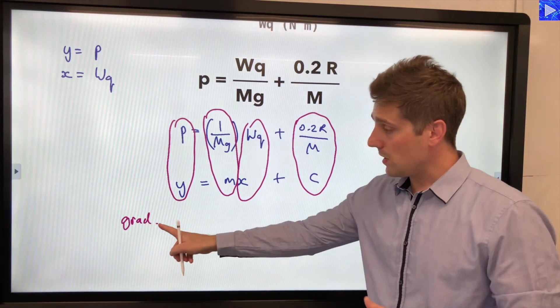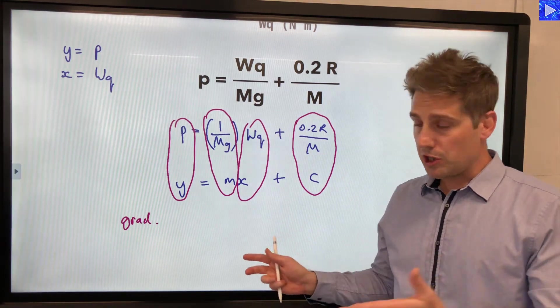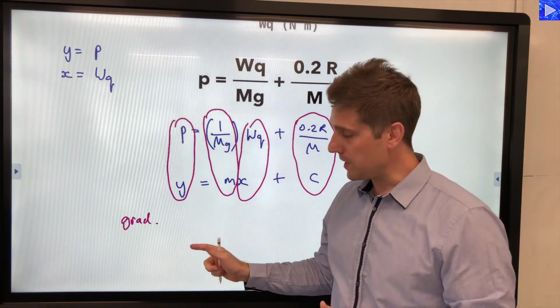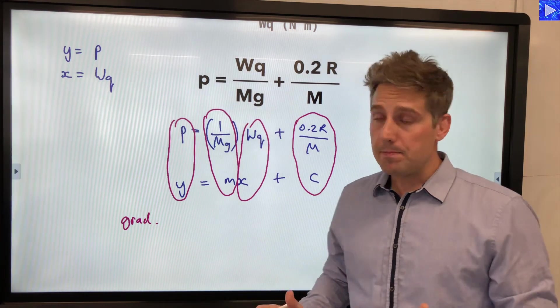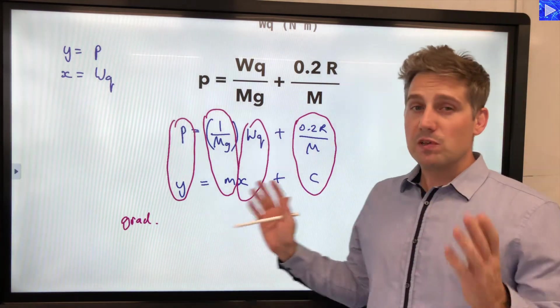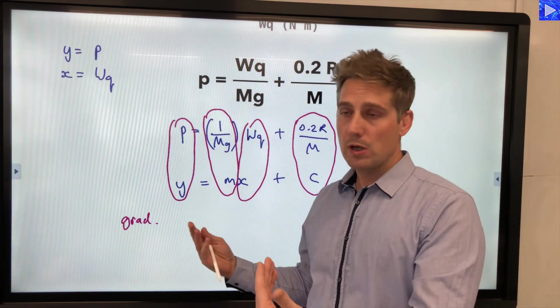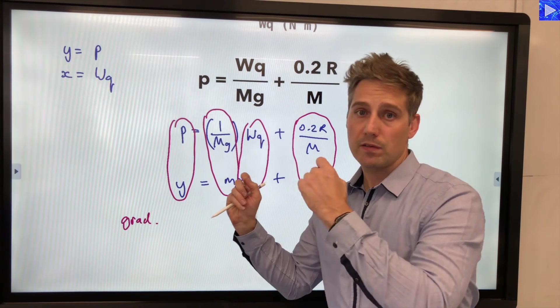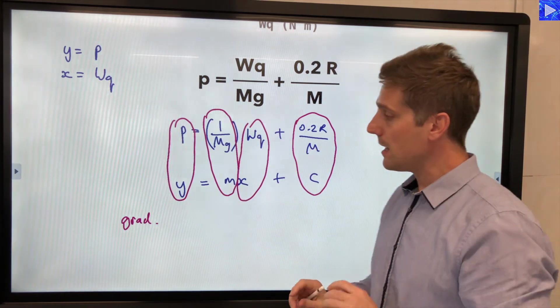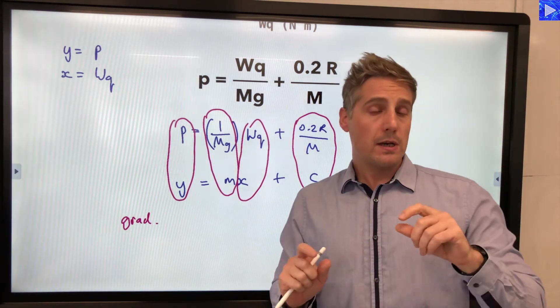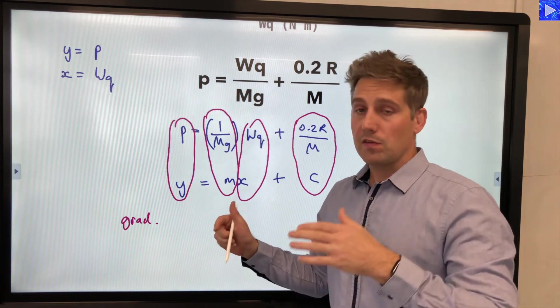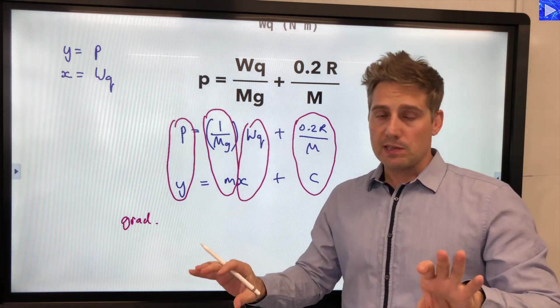By the way you notice I often write g-r-a-d so short for gradient abbreviation and not m. The reason for that is sometimes you have equations that have a lower case m in so I'm trying to keep it clear what the gradient is and separating it from anything else. Also you might have variables lower case c so y intercept makes it clear what's what.